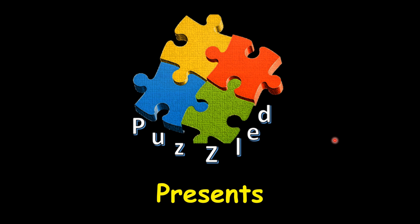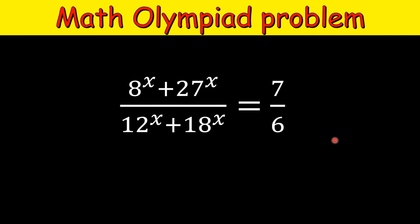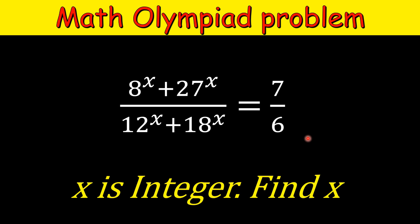Hello friends, we are back with another Math Olympiad problem. The equation is 8^x + 27^x divided by 12^x + 18^x equals 7/6. It's given that x is an integer, and we need to find x.